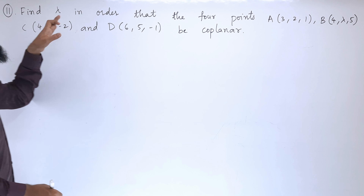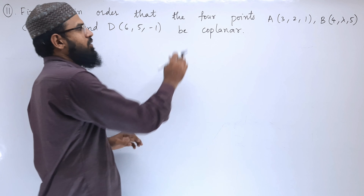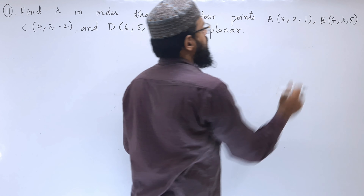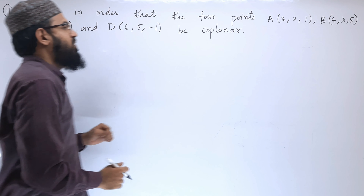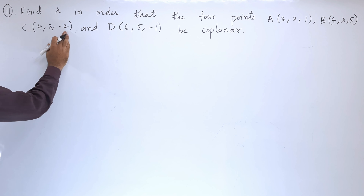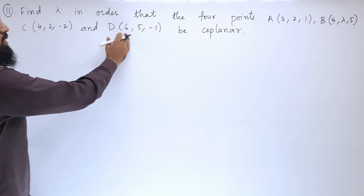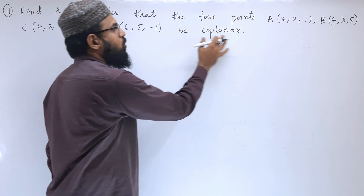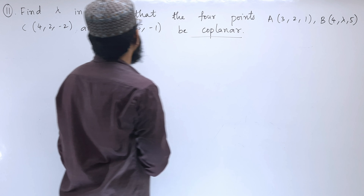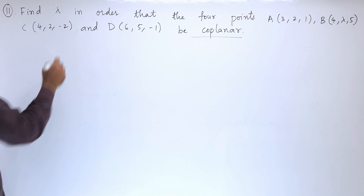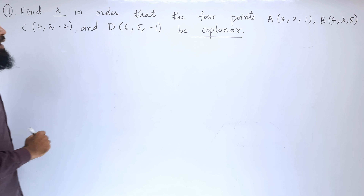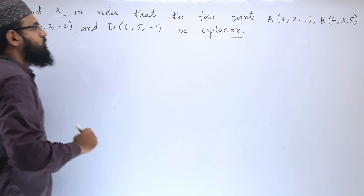Problem 11: Find lambda in order that the 4 points A(3,2,1), B(4,λ,5), C(4,2,-2), and D(6,5,-1) be coplanar. We have to find out the value of lambda such that the given points are coplanar.